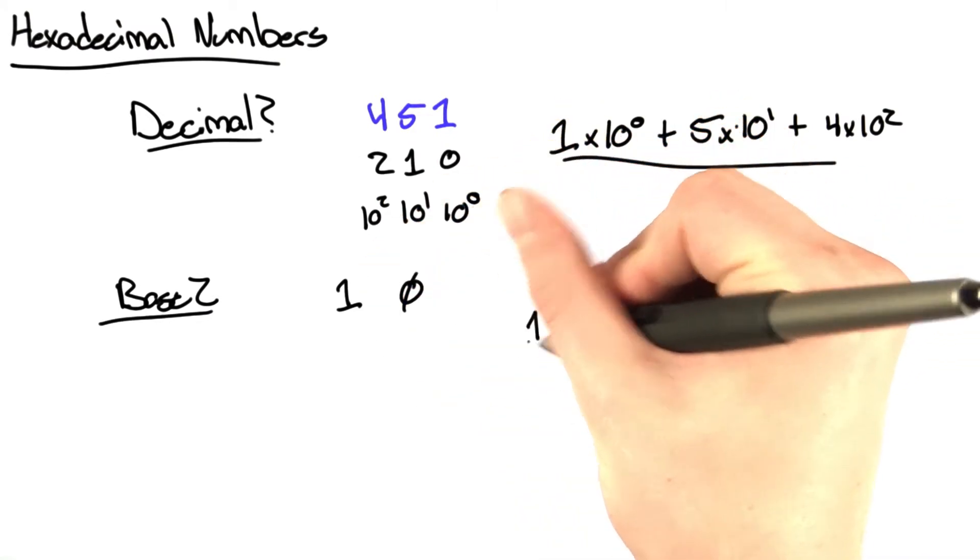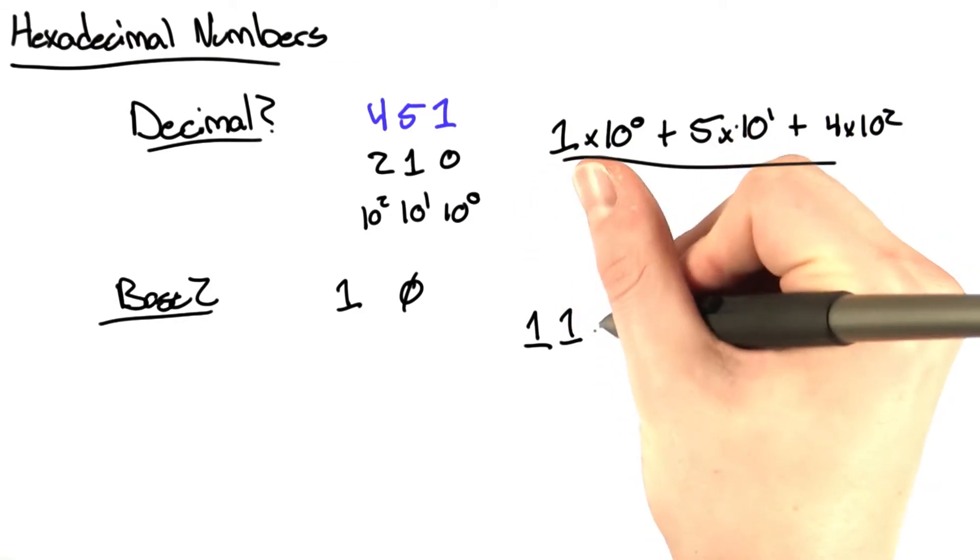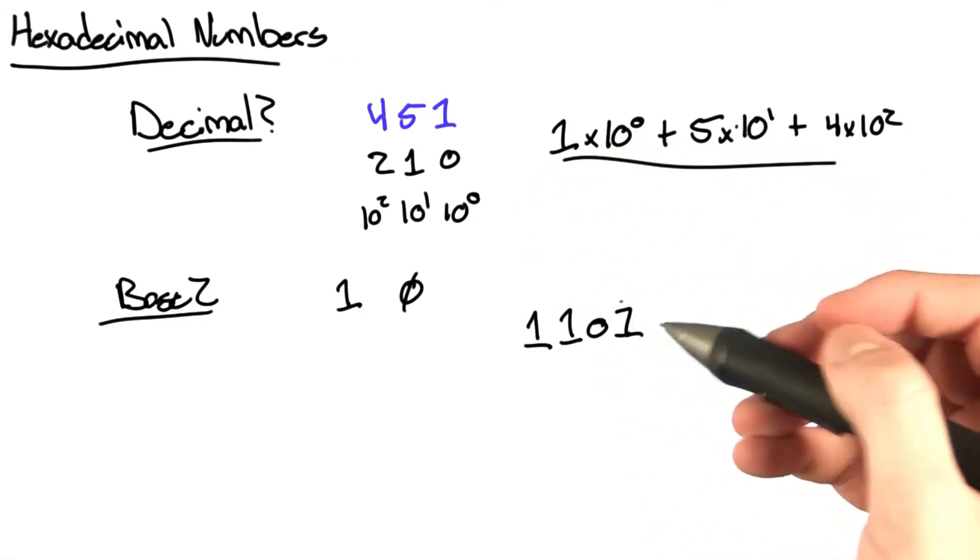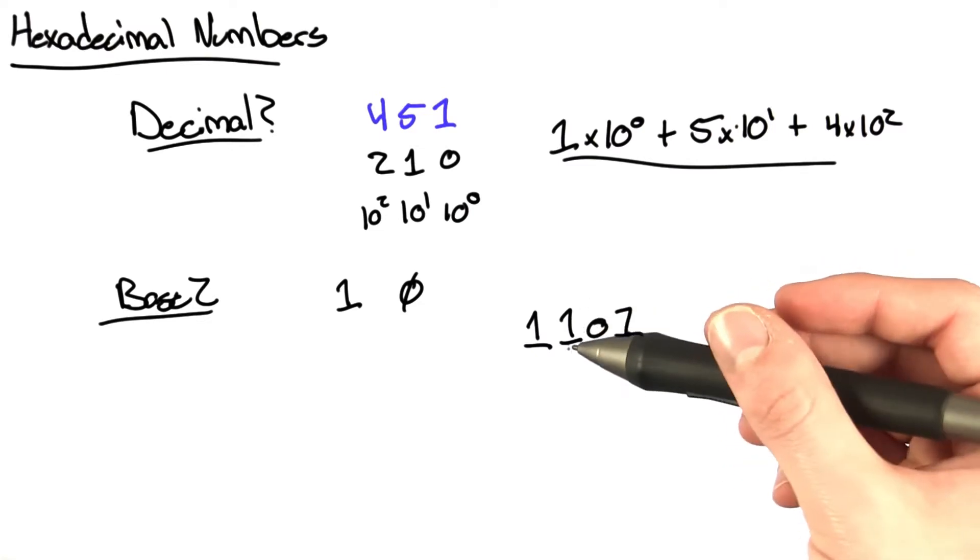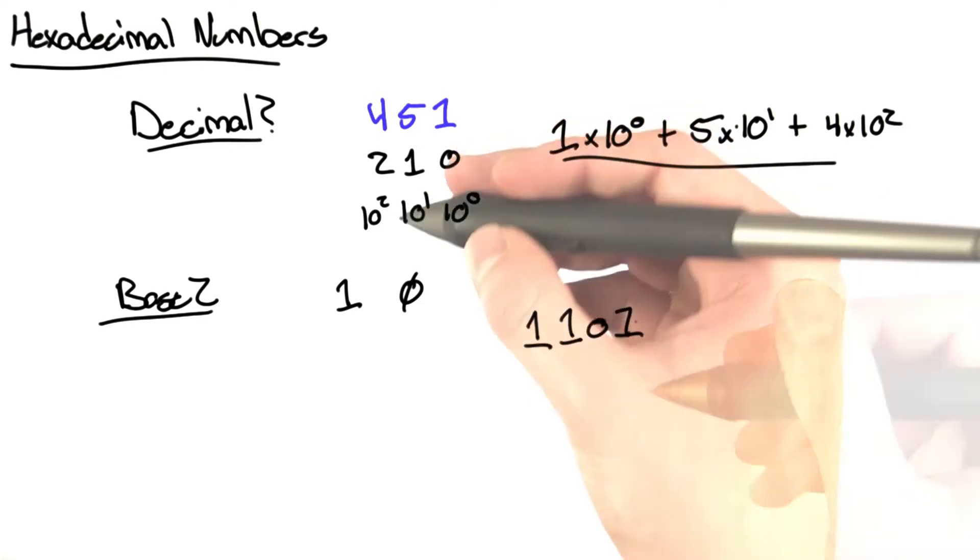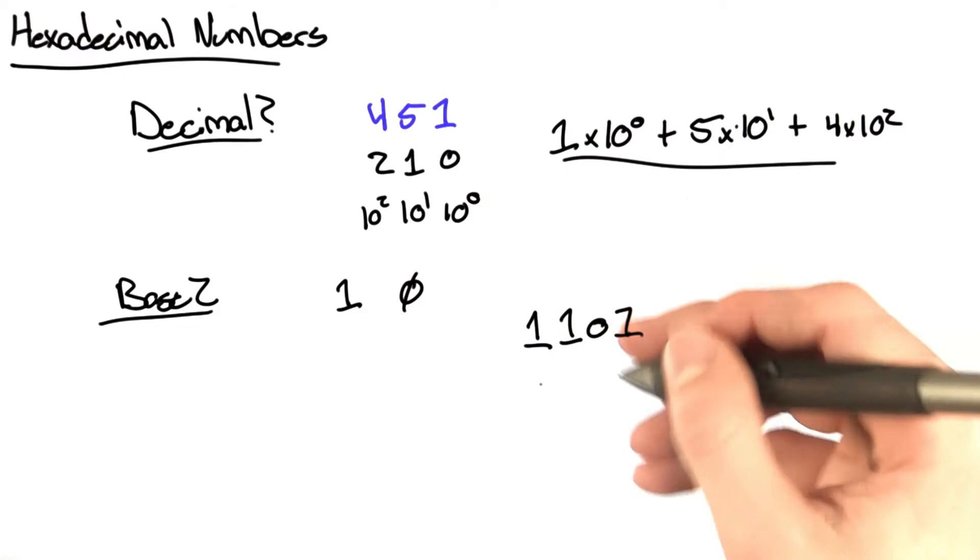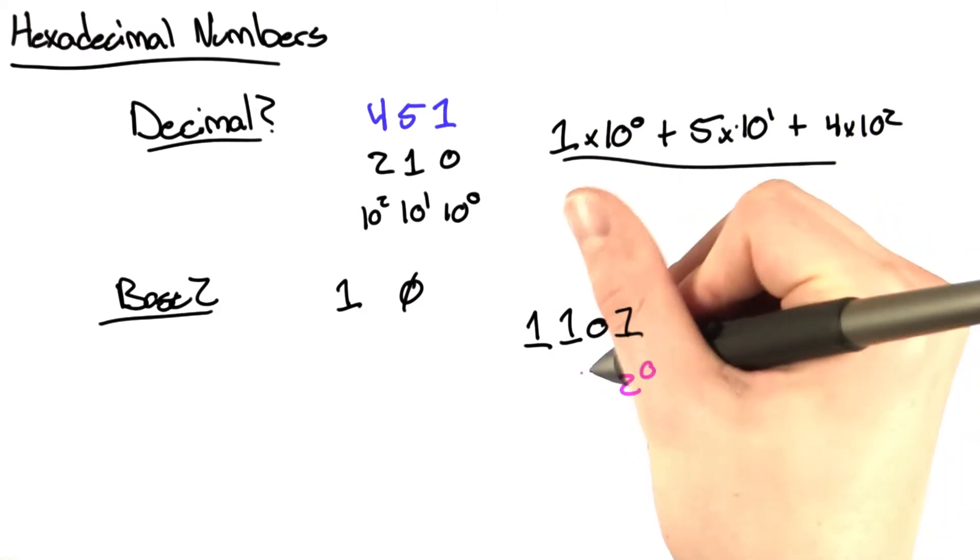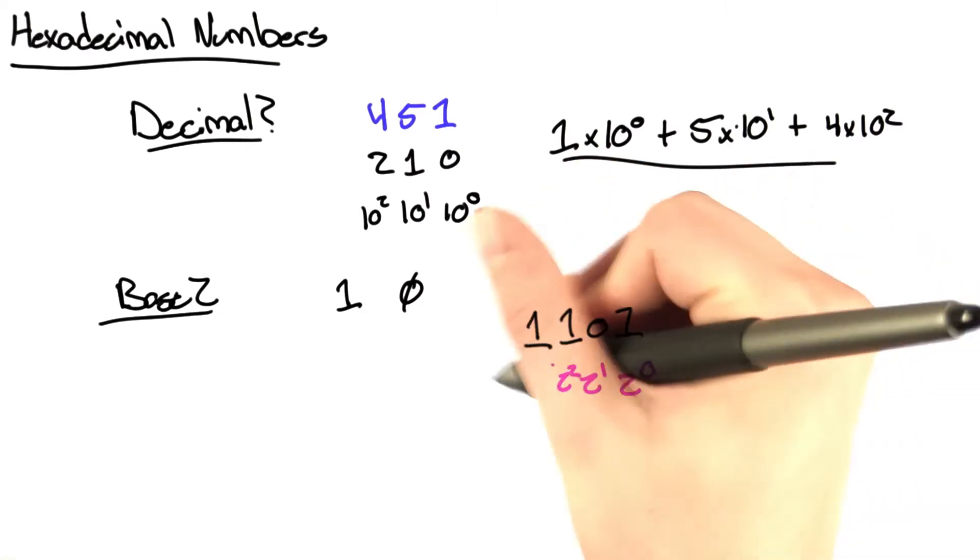Let's say we have this number, 1, 1, 0, 1. In this case, it's not the 1's place, the 10's place, the 100's place, and the 1000's place. We've abstracted this idea of a base so that we have 2 to the 0, 2 to the 1, 2 to the 2, and 2 to the 3.